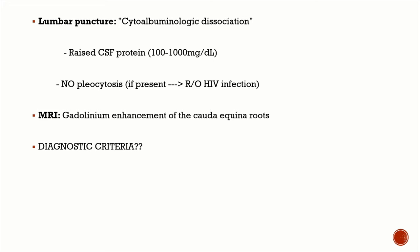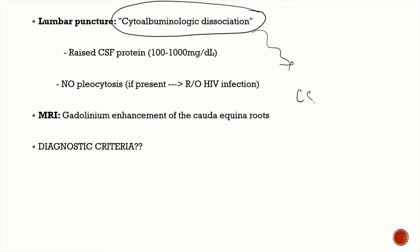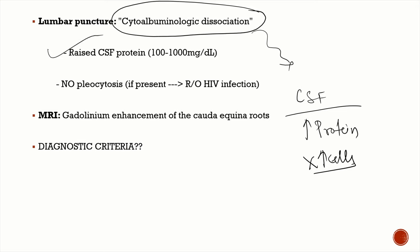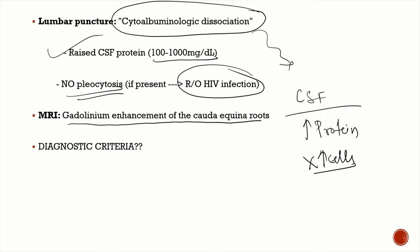CSF findings show cytoalbuminologic dissociation: protein is raised (typically 100 to 1000 mg/dL) with no increase in cells — no pleocytosis. If pleocytosis is encountered, check the retroviral status. MRI, though usually unnecessary, can show gadolinium enhancement of the cauda equina roots. The diagnostic criteria for GBS are Brighton's criteria.